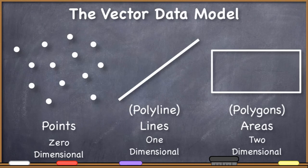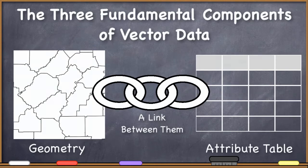When we're thinking about vector data, we should think about points, lines, areas or polygons, and if you're moving into three dimensions, then volumes or multi-patches. But the core of vector data theory is that you have this geometric representation, and it's linked to an attribute table.